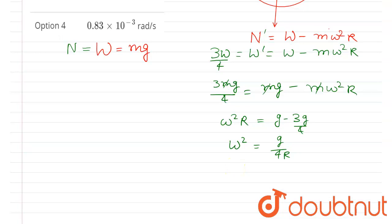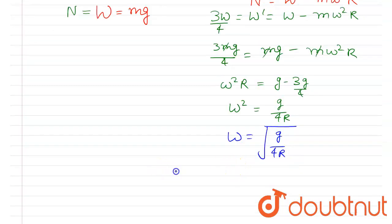Finally, if you take the square root, you will get ω is equal to √(g/4R). Now you can put the value of g and radius of the earth R. So here g is 10